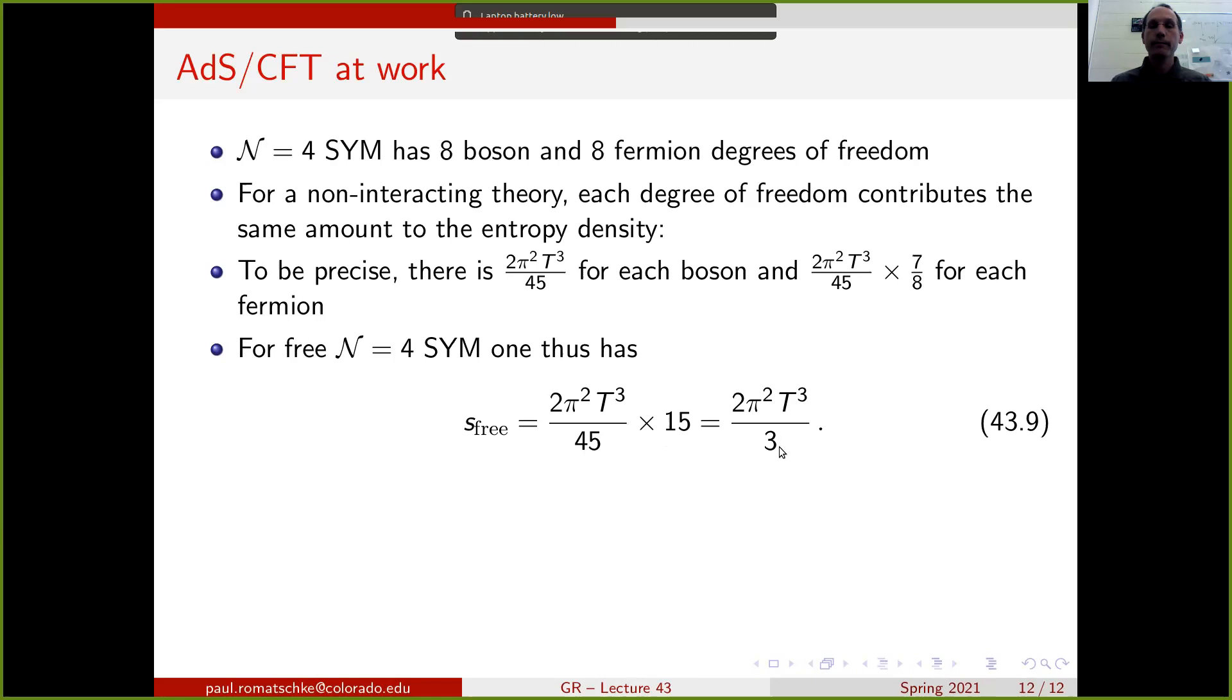And if we compare with the AdS result that we found for the entropy density of the black brane, we find that these two are not equal. They actually are equal within 25%. And the interpretation simply is that the AdS-CFT result for the entropy density of the black brane corresponds to the strong coupling limit of the quantum field theory. This is why this AdS-CFT calculation has such important implications for our studies of quantum field theory, because it allows us to access the strong coupling region of the quantum field theory, which are usually not accessible with most known methods. And that completes the lecture.